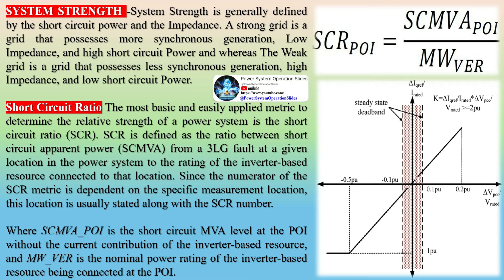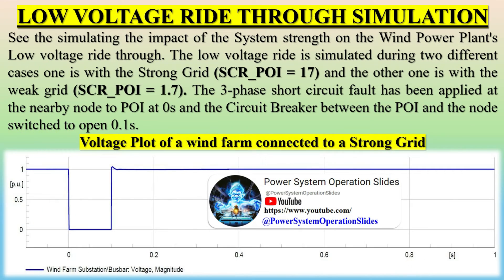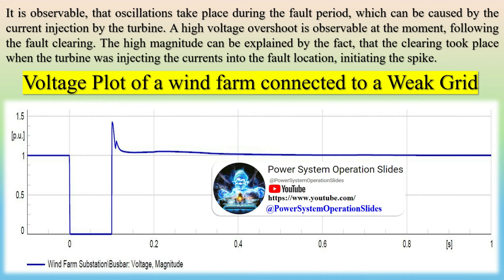Regarding Low Voltage Ride-Through: the grid operator requires that during a fault, the renewable plant must ride through the low-voltage occurrence at the system for the time frame mentioned in the grid code. In China, major blackouts have occurred as a result of entire wind parks tripping offline due to a brownout, increasing the focus on the LVRT feature of wind turbine control systems. The LVRT feature for renewable plants is much required to avoid cascading failures. It is observable that oscillations take place during the fault period, caused by current injection by the turbine, and a high voltage overshoot occurs following fault clearing — explained by the fact that clearing took place while the turbine was injecting currents into the fault location.